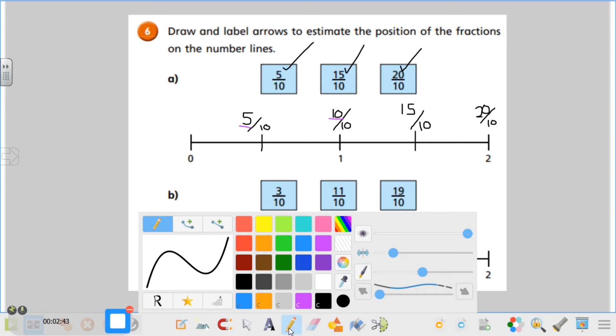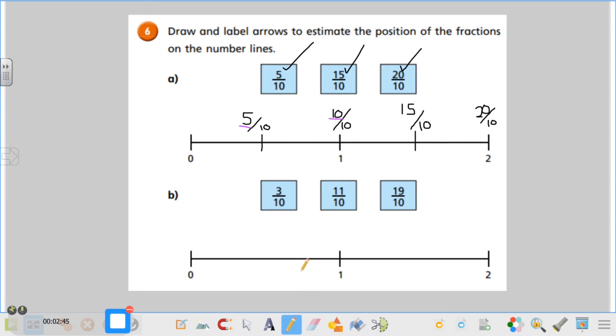So I've plotted that one and I've also drawn and labeled that one on my number line. Now we're still working with tenths, and we know that this here is going to still be 10 tenths because it is 1 whole and one whole is the same as 10 tenths. So I'm going to label this 10 tenths, and therefore I know that this two is going to be the same as 20 tenths because I've already worked that out in question a.